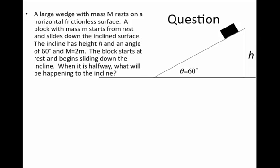We'll now solve a problem which uses all of our tools of conservation of momentum and conservation of energy. A wedge with mass capital M rests on a horizontal frictionless surface. A block with mass little m starts from rest at the top of this wedge and slides down the inclined surface. The incline has a height h and an angle of 60 degrees, and the wedge is twice as heavy as the block.